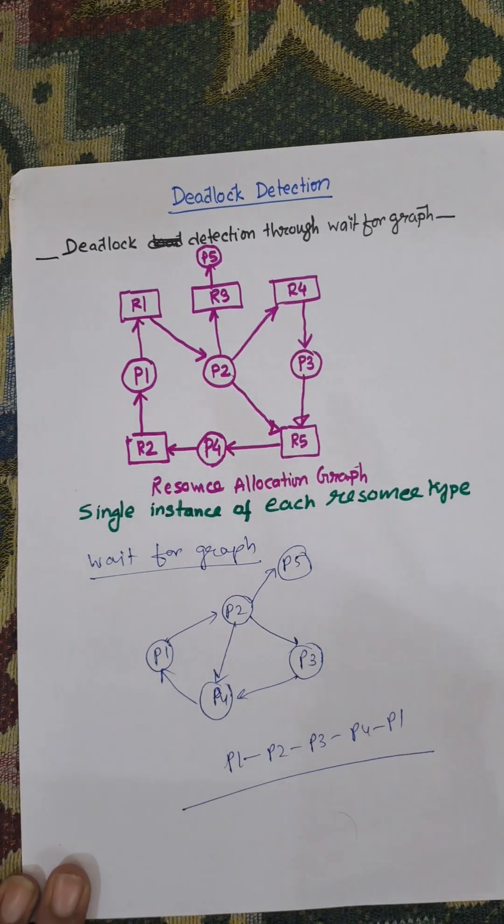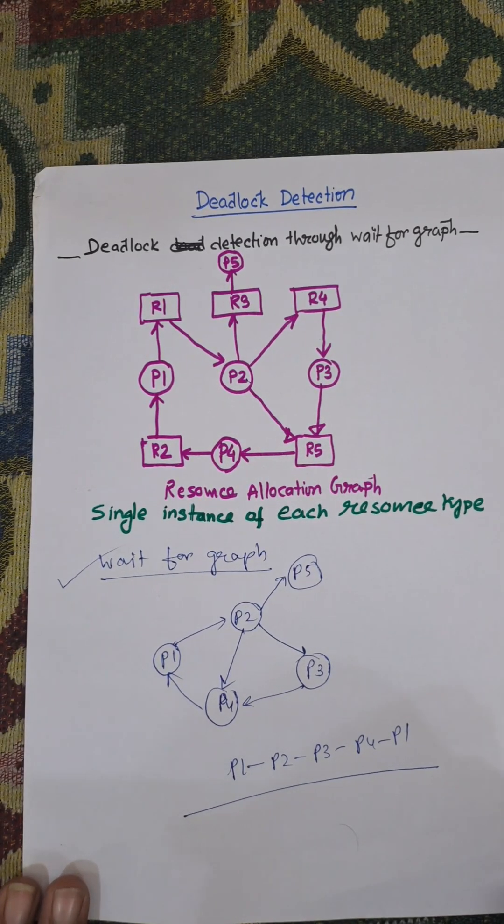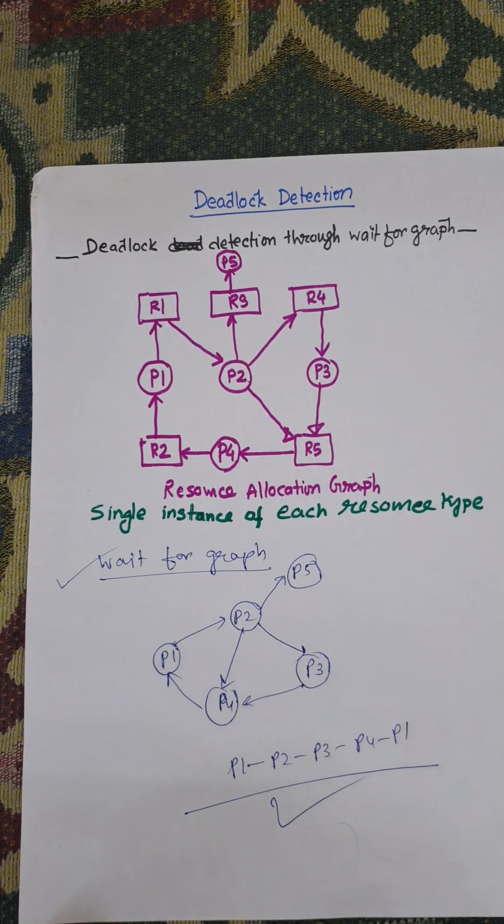And in this way we are creating a wait-for graph. So this is the wait-for graph and there is a cycle in the wait-for graph, so there is a deadlock. Thank you very much for watching this video, share and subscribe.